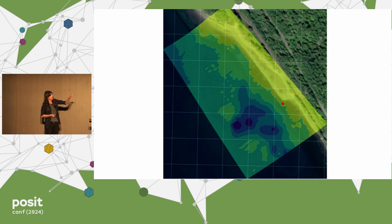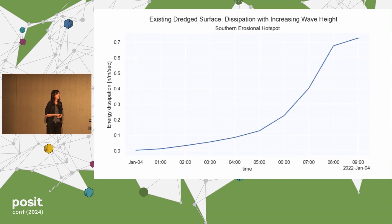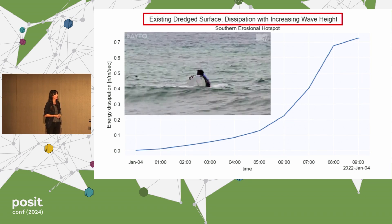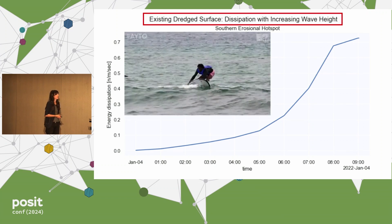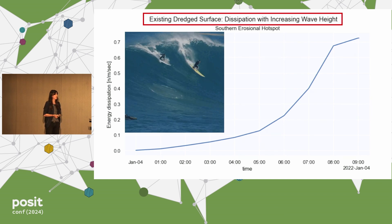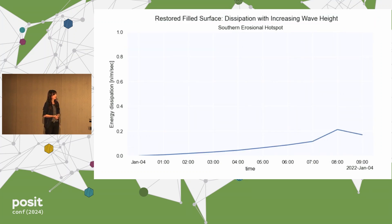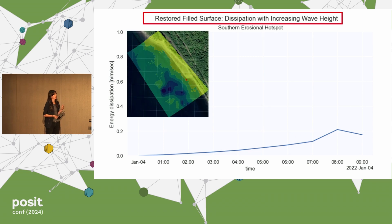Zooming in on this image, the red dot on the right-hand side was an area of high erosion risk. We extracted data from that point and started plotting it and asking questions. For the existing dredged surface, this is energy dissipation as wave height increases — as time goes up, wave height increases and dissipation itself increases. Small waves do not carry a lot of energy, so you can't really transport anything and you won't face much erosion risk. But as those waves grow in height, they are transporting a lot of energy that is being imparted into the sediments, resulting in erosion. We knew wave height was a problem. But with a naturally restored and filled surface, we can see that with increasing wave height the dissipation itself is way lower — so we have data now about what restoration might be able to do.